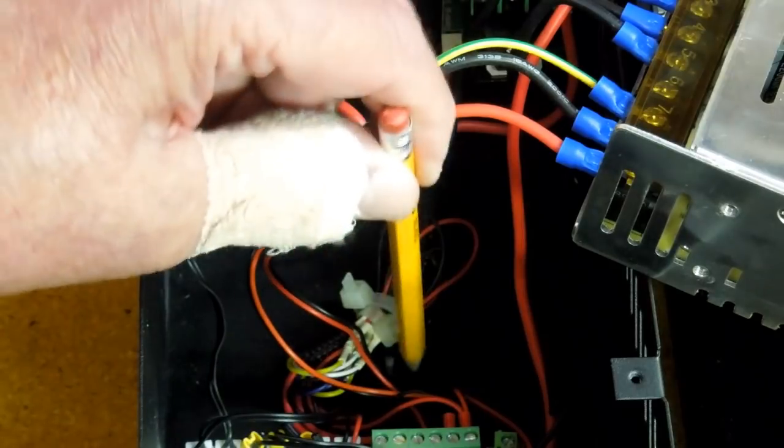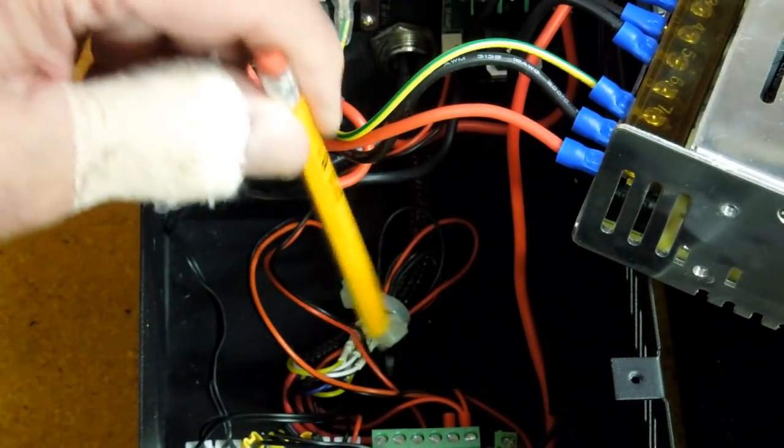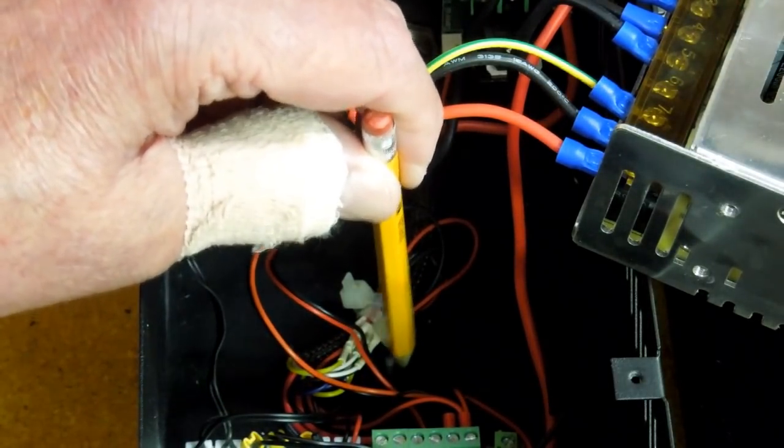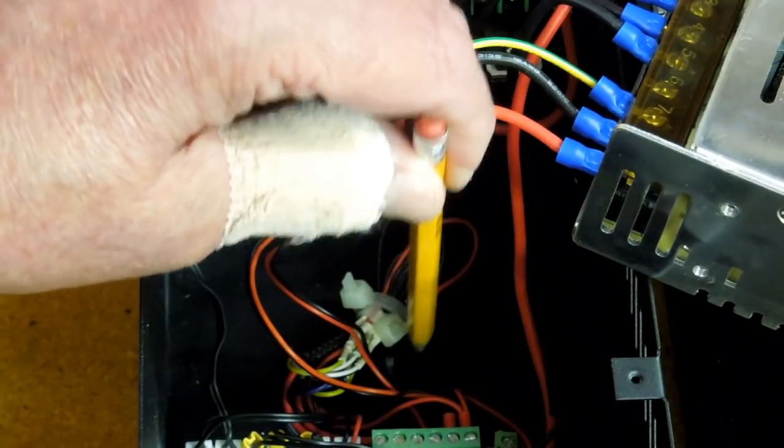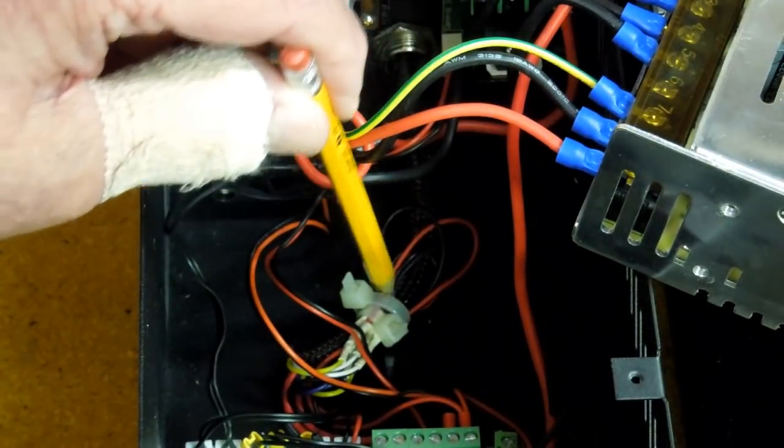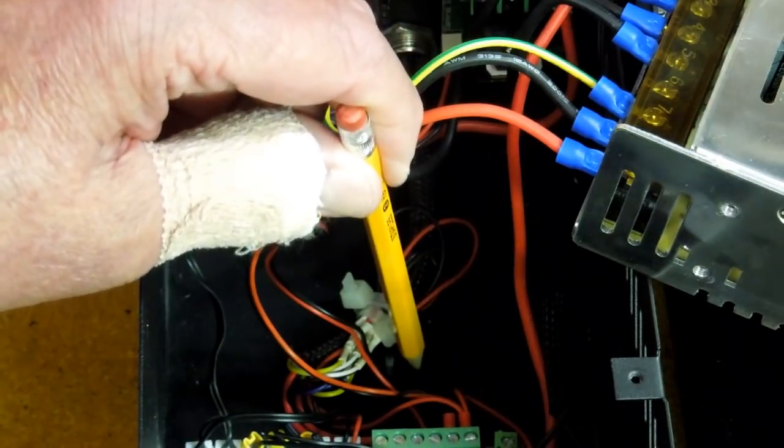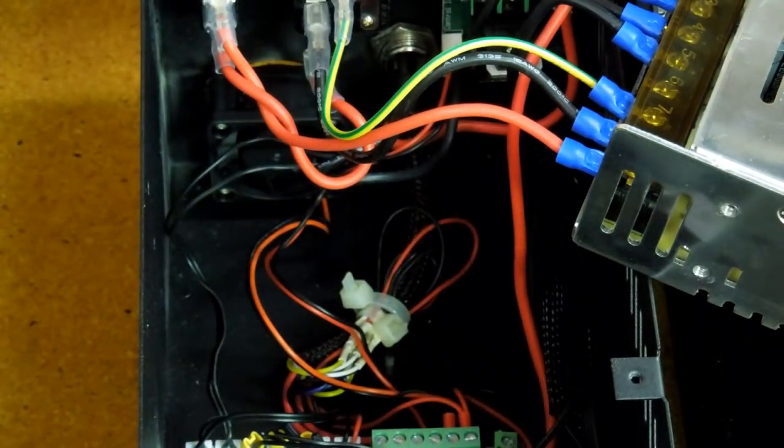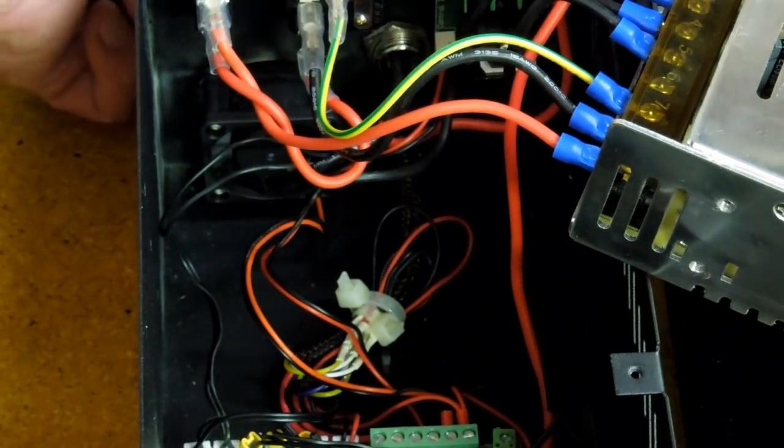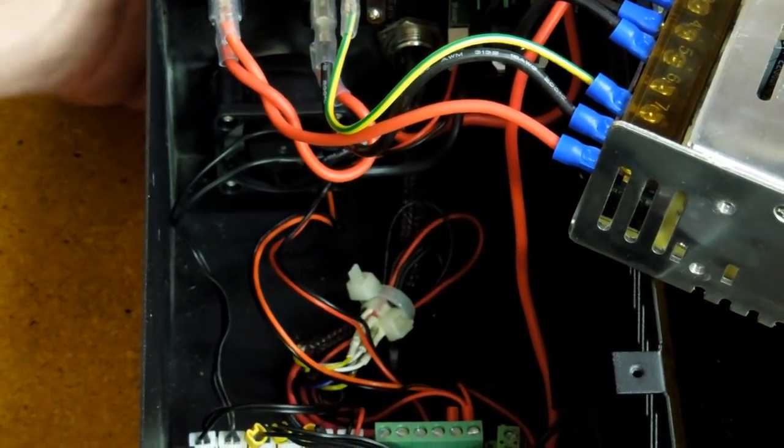On the bottom of the box here, which is actually the top, you've got a little place there where you can run a zip tie underneath that and anchor that to the case. Then those wires can't be pulled out of there by accident. You can see they're tied down.